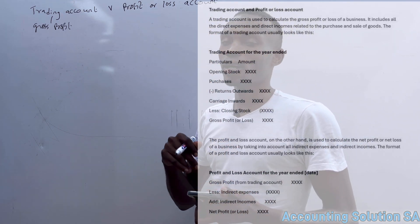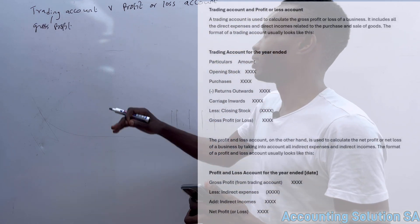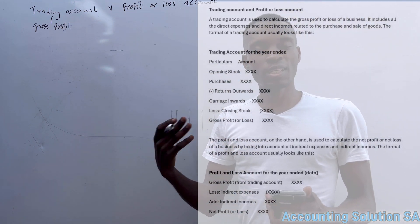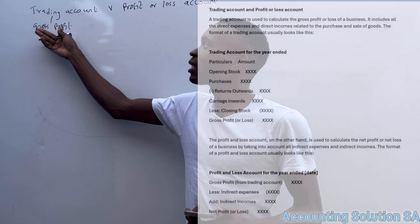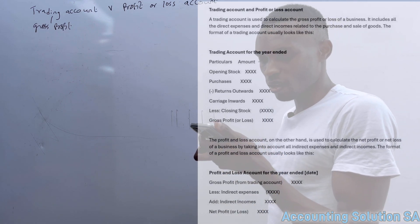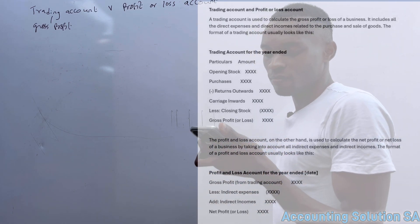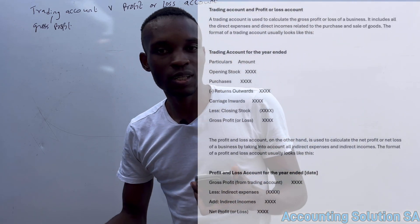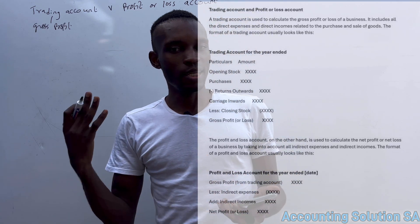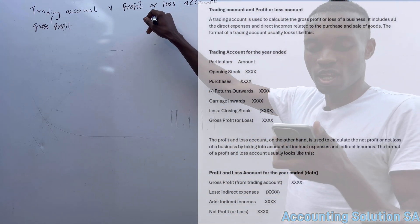Under the trading account we also have to record sales if we have any, but for today's example we don't have it. The profit or loss account, on the other hand, includes other income as well as expenses — you don't subtract indirect expenses under the trading account, they fall under profit and loss. The format of profit and loss starts with the gross profit calculated from the trading account, then we less indirect expenses and add indirect income. Indirect income is simply other income. After that you get your net profit or net loss.